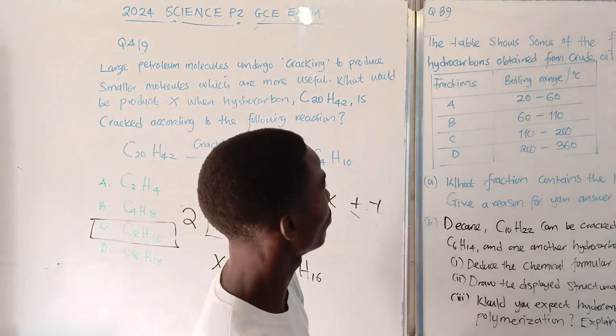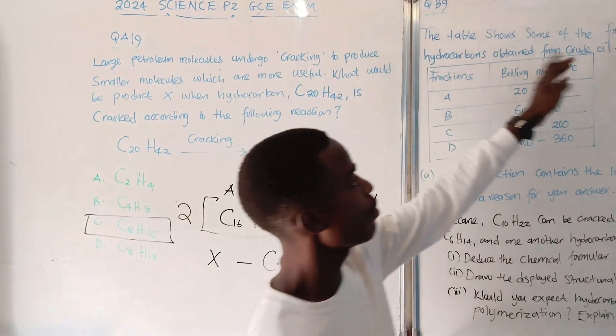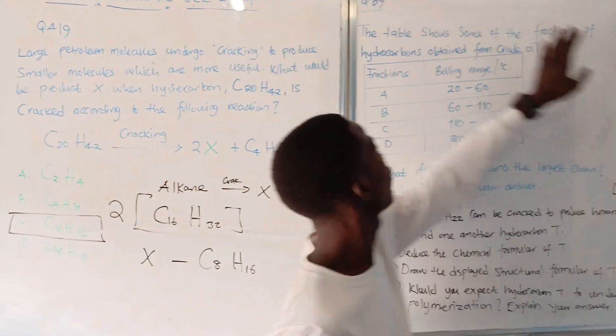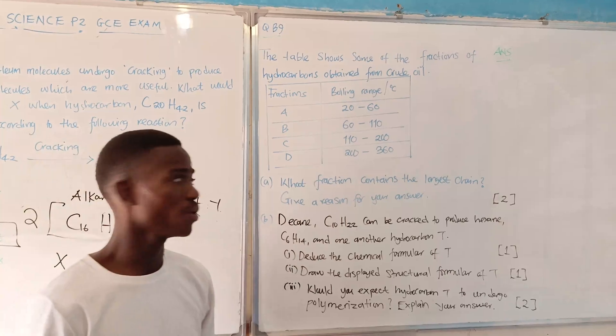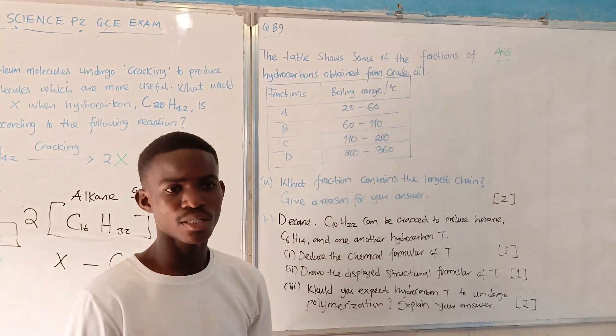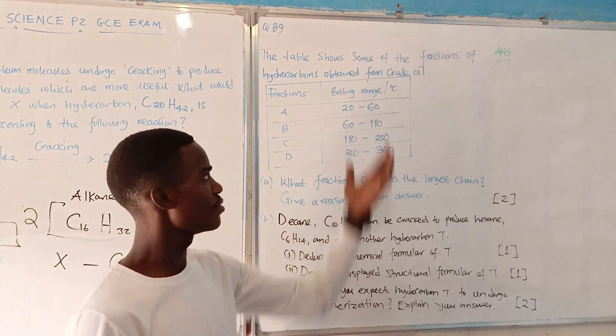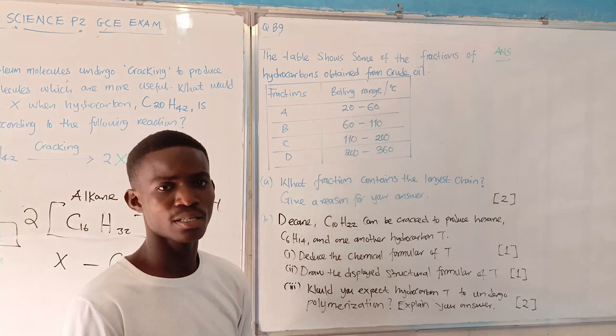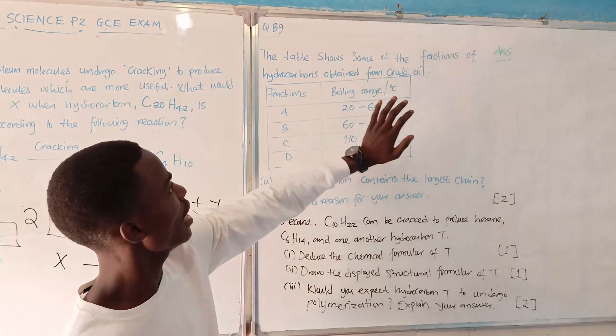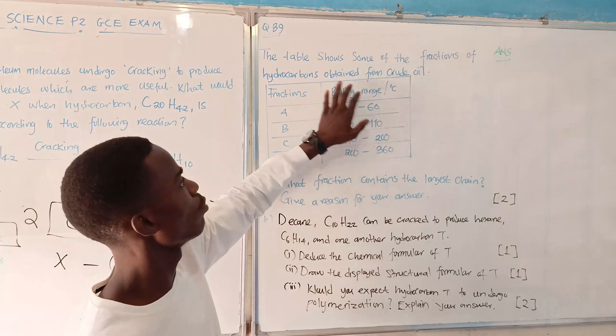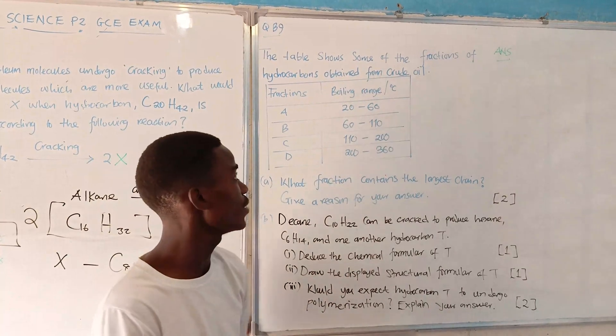Going to the table, question B9. The table shows some of the fractions of hydrocarbons obtained from crude oil. Understanding this table, these temperatures were obtained when obtaining these hydrocarbons from crude oil, meaning that they were passed through the fractioning column.